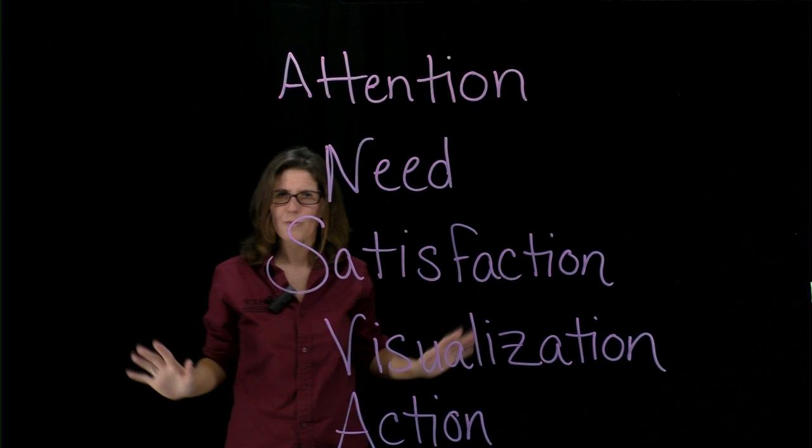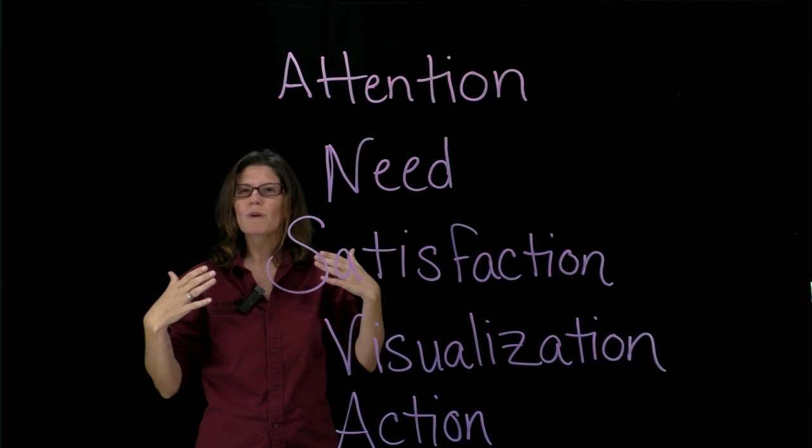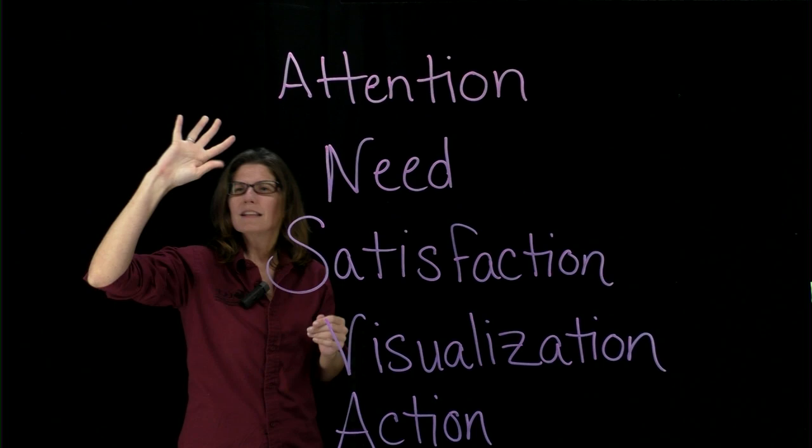An introduction has five components. The first thing you always do in an introduction is open with impact — come out with a big statement, something that gets the audience's attention, something that hooks them. You always want to be a little bit louder in the open with impact than the rest of your speech, because you're getting the attention of the audience. It's very important to think about that open with impact statement.